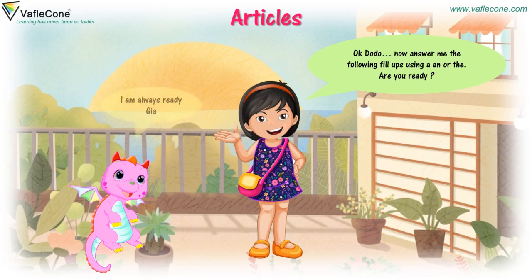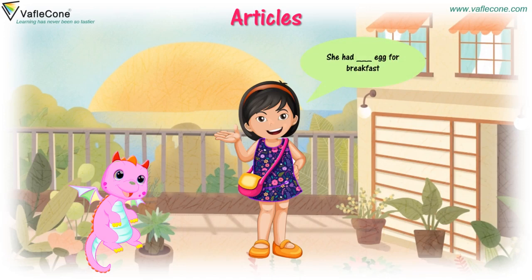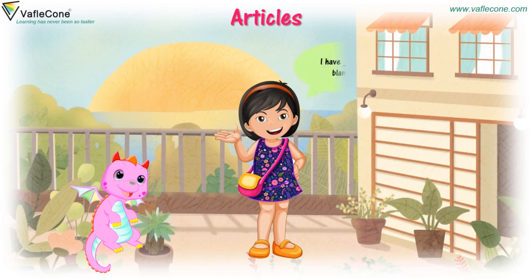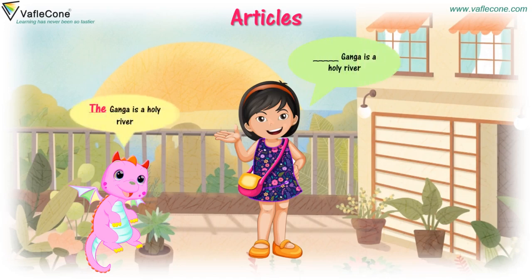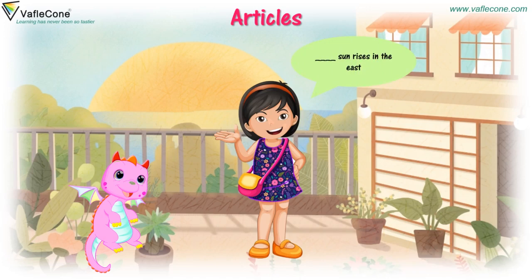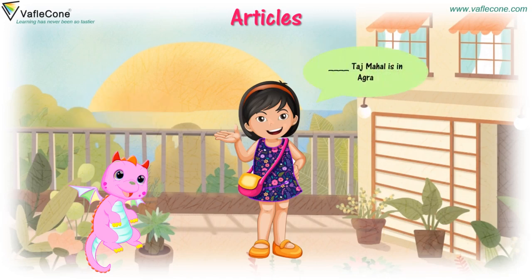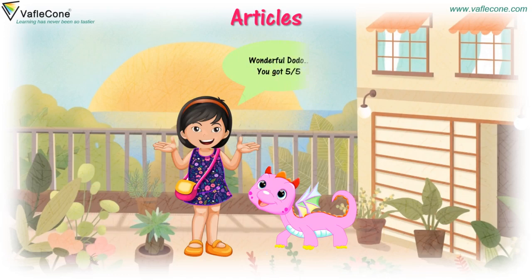I am always ready, Jaya! She had a blank egg for breakfast — she had AN egg for breakfast. I have blank blanket — I have A blanket. Blank Ganga is a holy river — THE Ganga is a holy river. Blank sun rises in the east — THE sun rises in the east. Blank Taj Mahal is in Agra — THE Taj Mahal is in Agra. Wonderful, Dodo! You got five out of five!